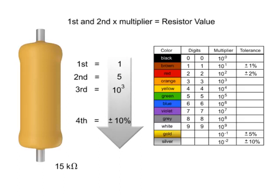Since the first digit is 1, the first band would need to be brown. The second digit is 5, so the band color would need to be green.